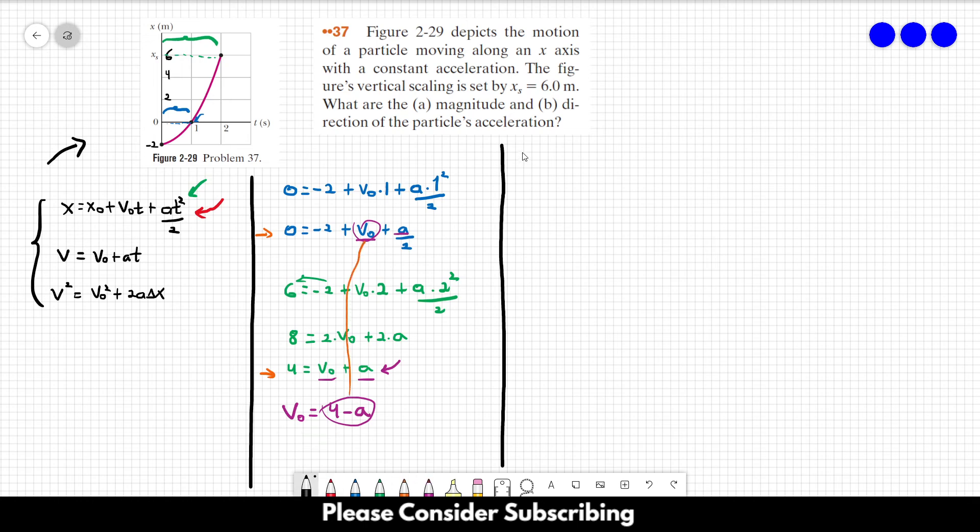And then we have that 0 equals minus 2 plus 4 minus a plus a over 2. Simplifying, this gives us a equals 4 meters per square second. So this is the acceleration.